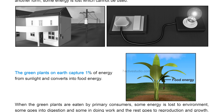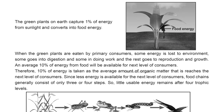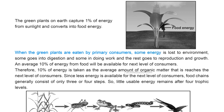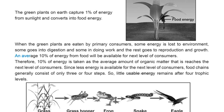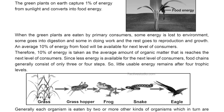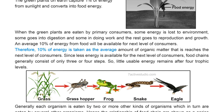Green plants on Earth capture about one percent of energy from sunlight and convert it into food energy. When green plants are eaten by primary consumers, some energy is lost to the environment, some goes into digestion, some into doing work, and the rest goes to reproduction and growth. On average, only 10 percent of energy from food is available for the next level of consumers. Because so little usable energy remains, food chains generally consist of only three or four steps.